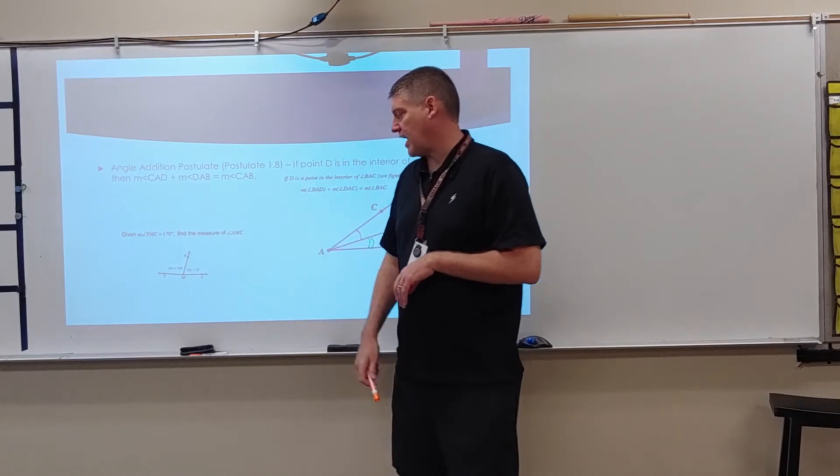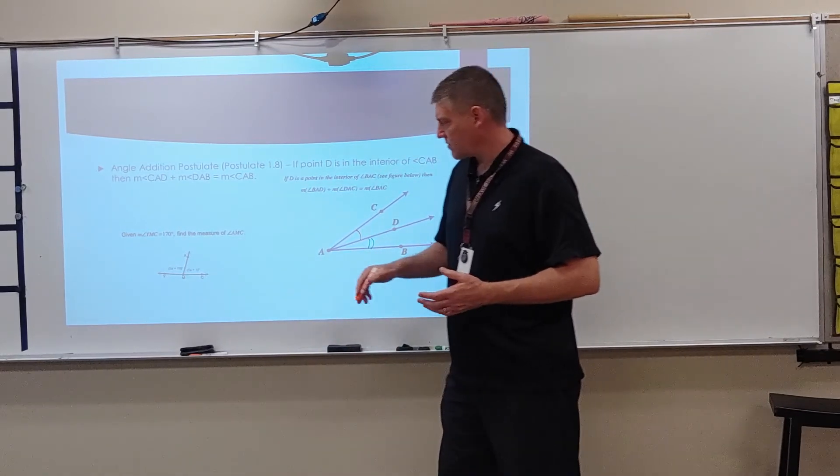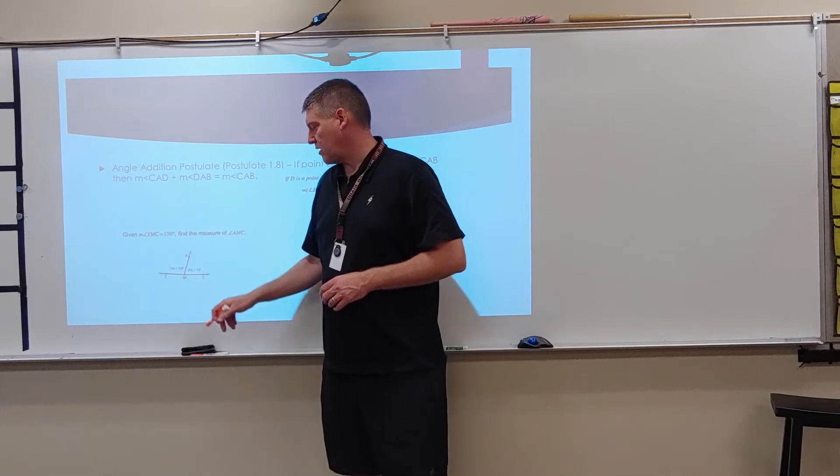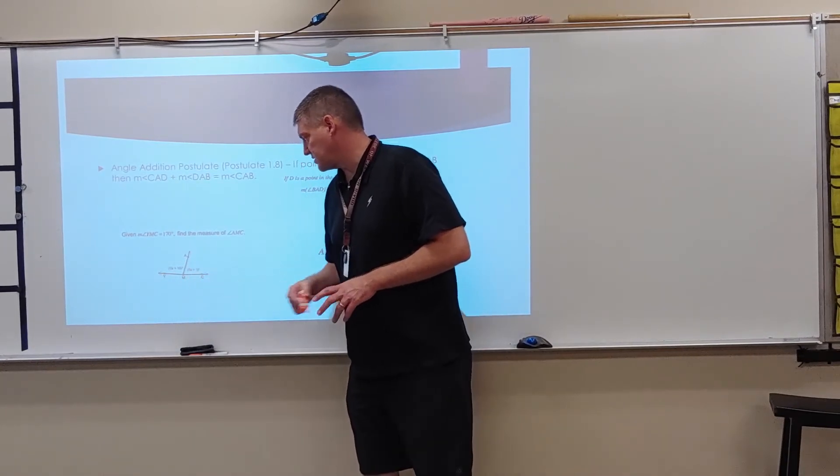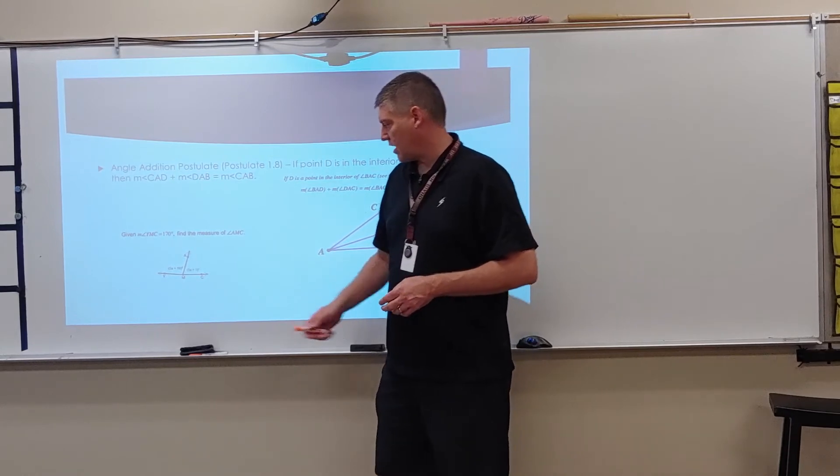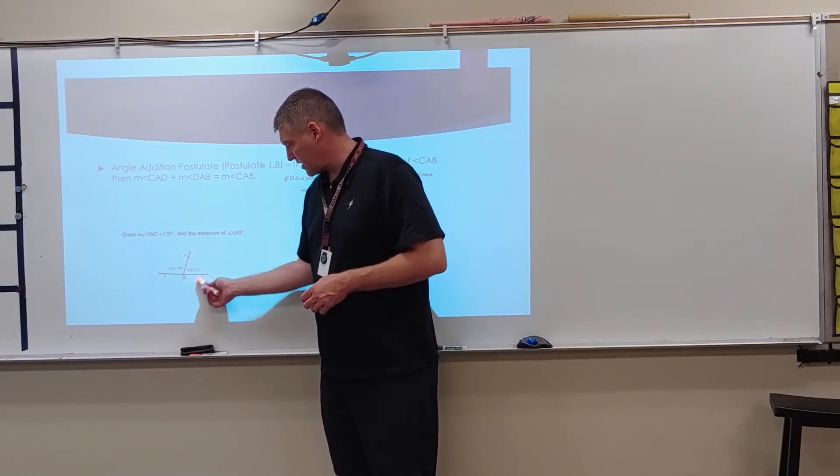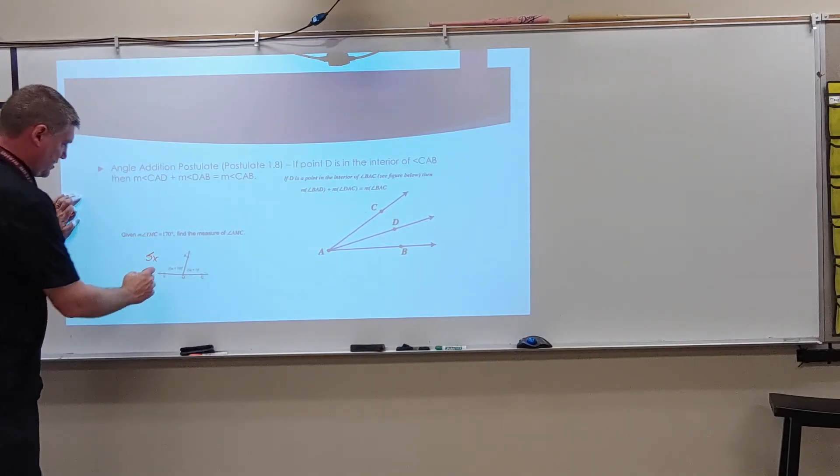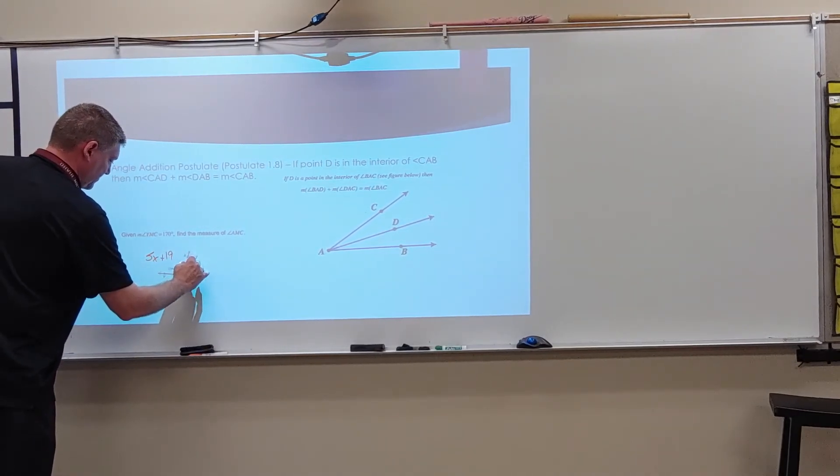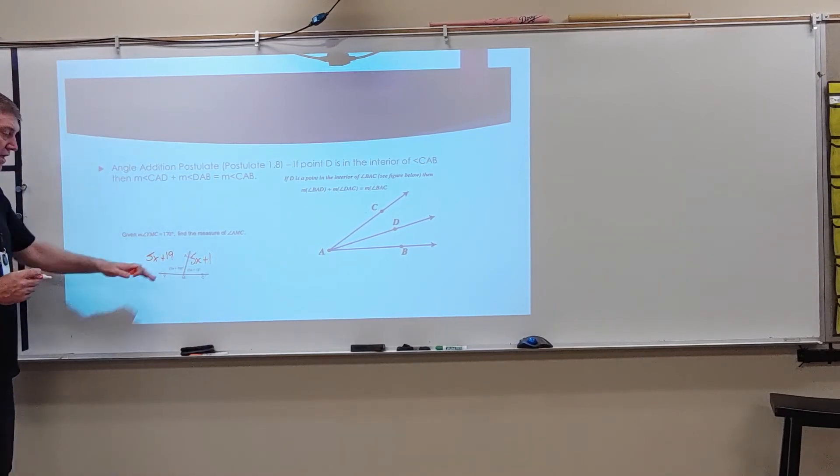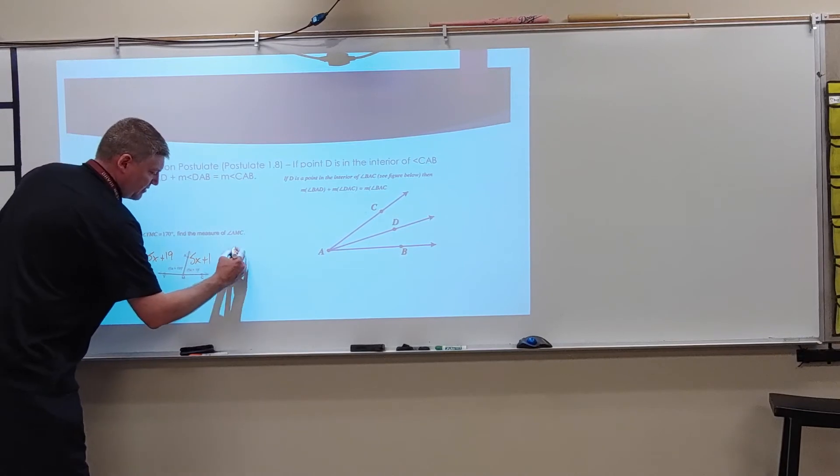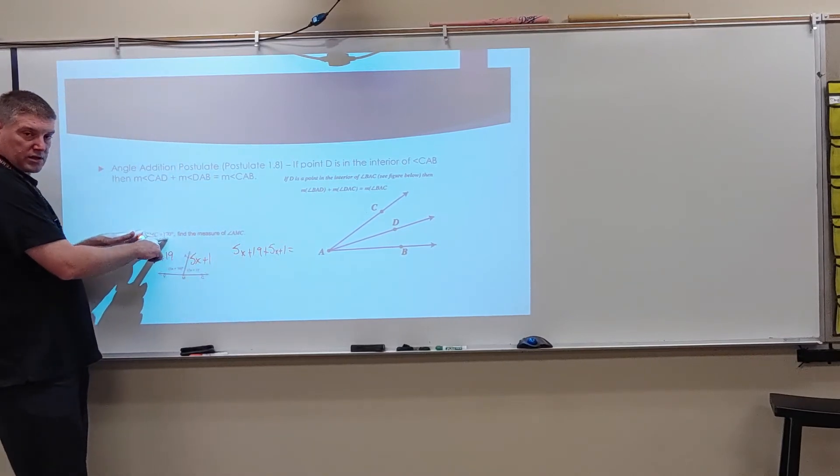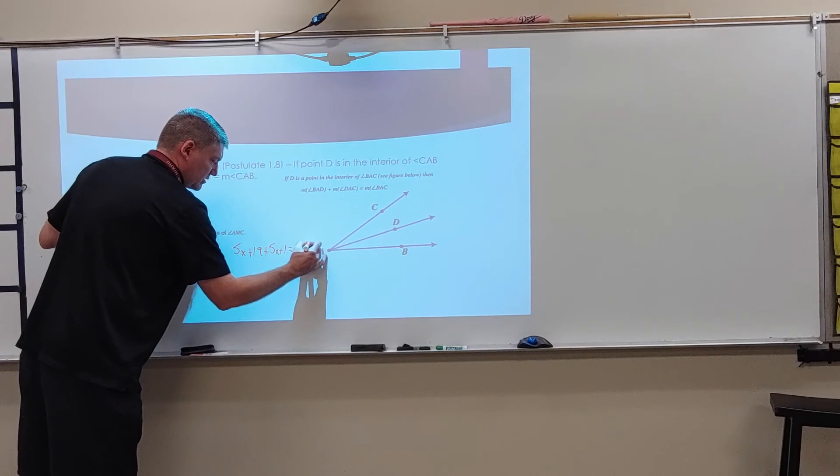So over here we have an example of that and how we would use algebra. So I'm not sure if you can quite see this. I will write it a little bit larger here. It says given the measure of YMC, so this entire angle YMC, is 170 degrees. Find the measure of AMC. Now, I'm not sure if you can read it. It's kind of tough to see. I'm going to come over here and rewrite this. This is 5X plus 19, and this is 5X plus 1. So I'm going to take these, and what I'm going to do is I'm going to add them together. 5X plus 19 plus 5X plus 1, and I'm going to set that equal to this angle, 170 degrees.